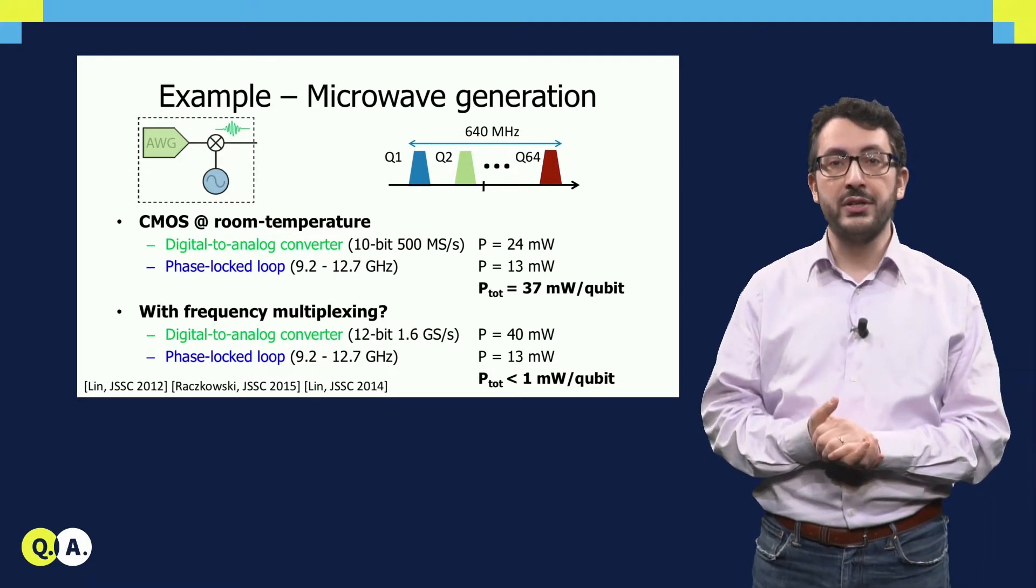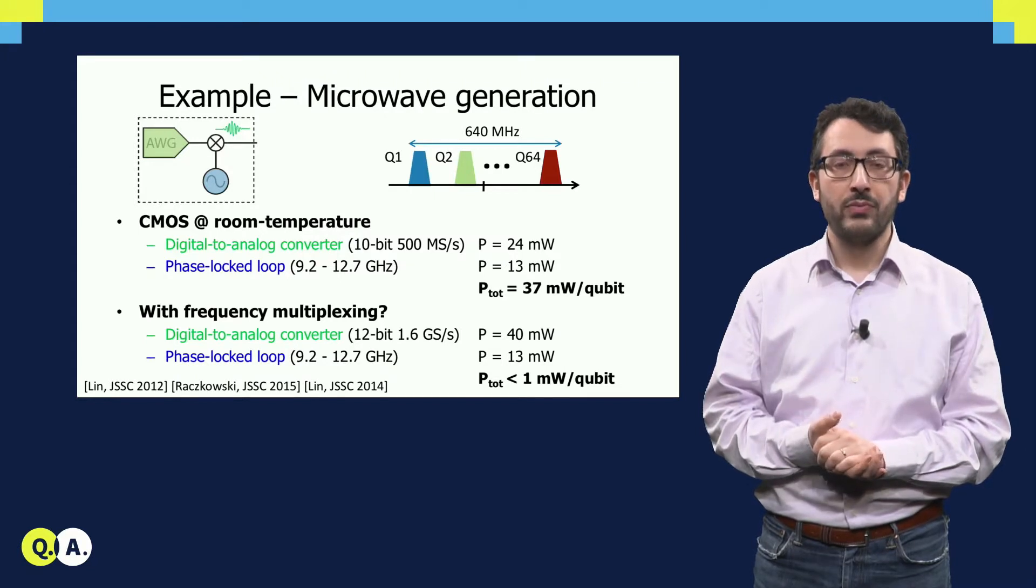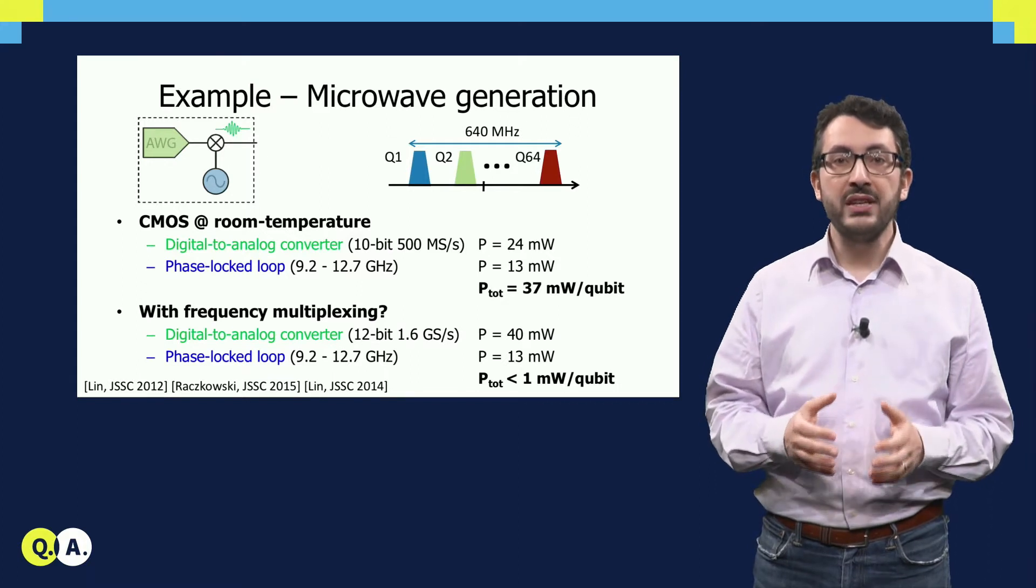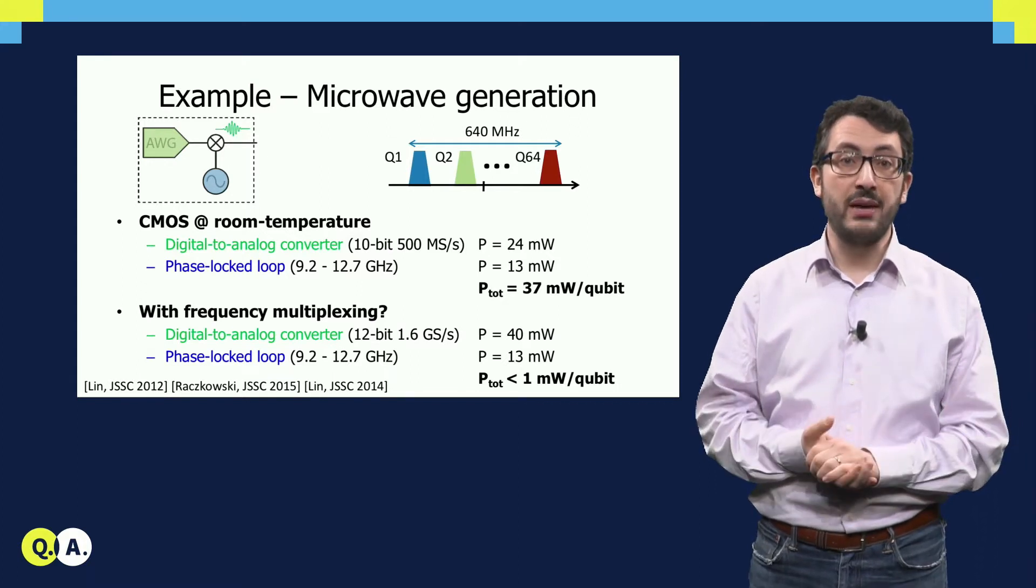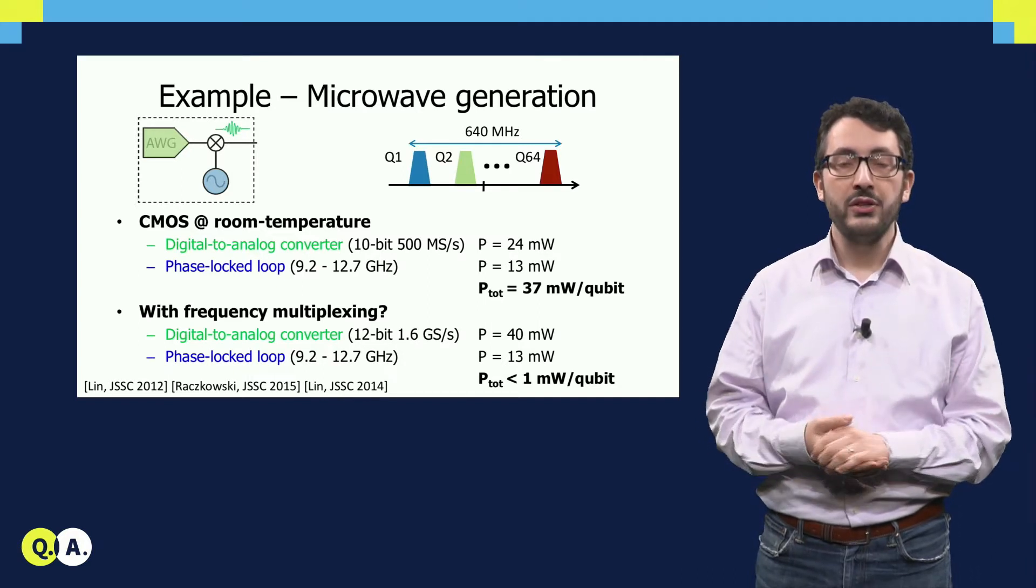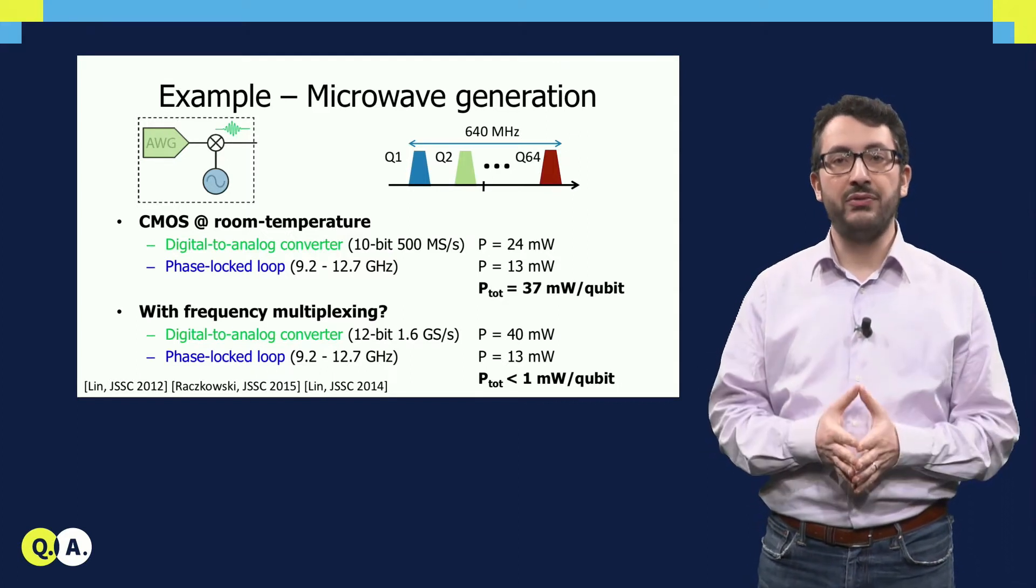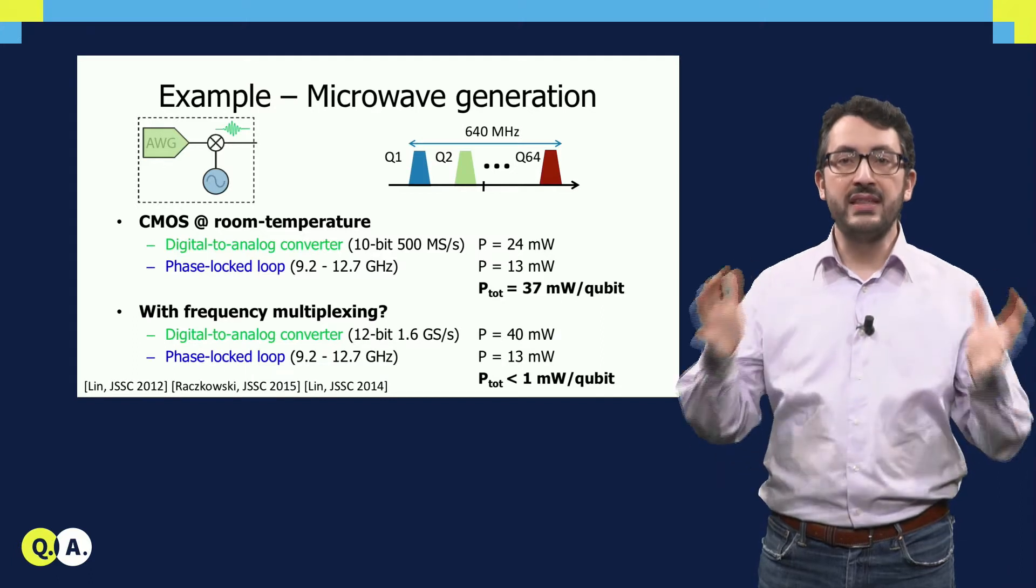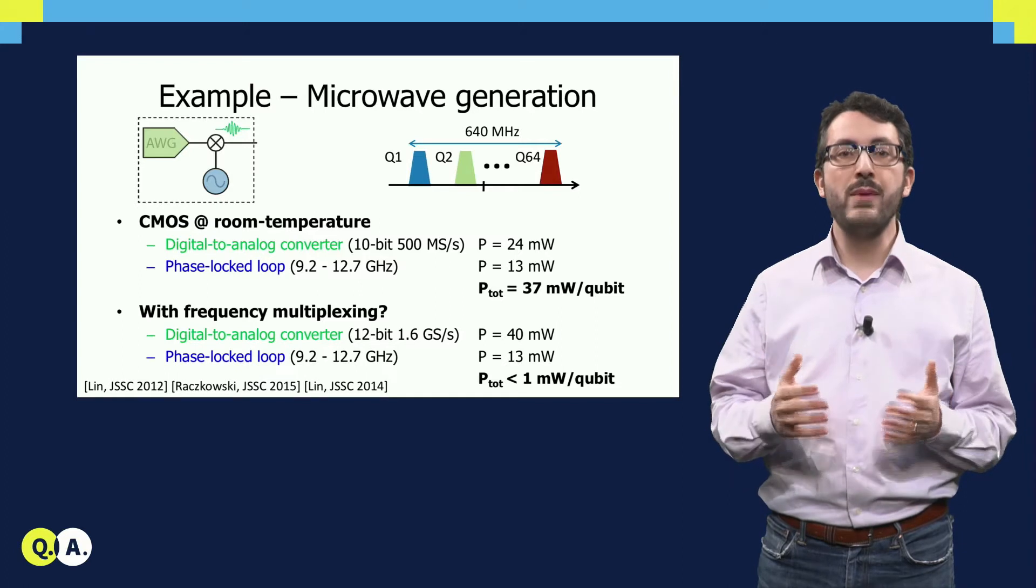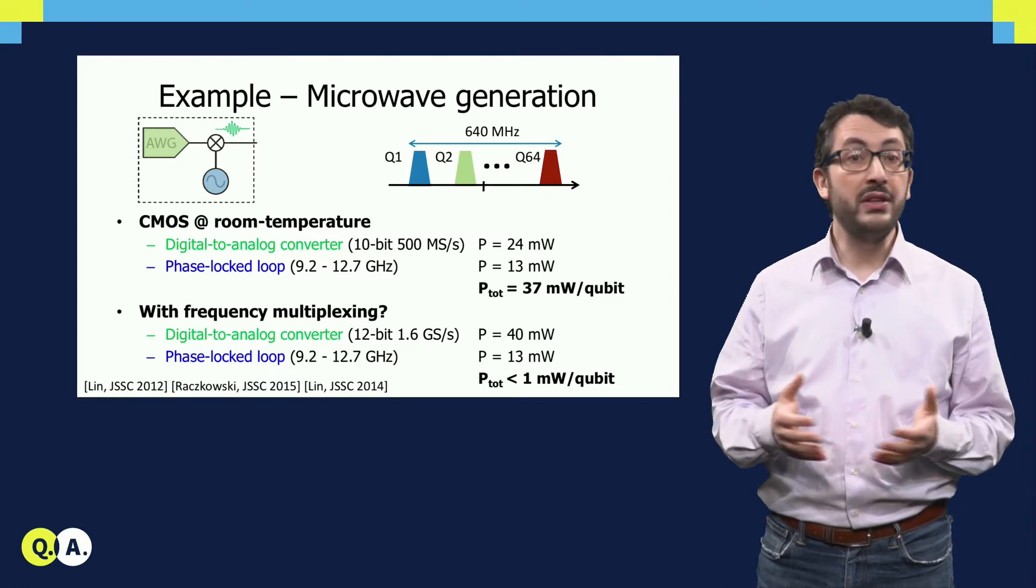So you see that the number at the bottom changes. As a final result, we have higher total power, but we are addressing more qubits, 64 in this example. So we can get less than 1 mW per qubit. So what is the main idea here? The challenge is that when we design the electronic interface, we have to look at the system level. We have to co-design the qubit processor and the electronics in order to make smart choices that make all of the electronics possible, for example in terms of power consumption.